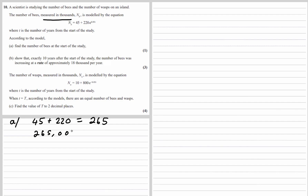Part B: we need to show that exactly 10 years in — when t is 10 — the number of bees was increasing at a rate of approximately 18,000 per year. When it's the rate of change, it means differentiation. We want dn/dt, so we need to differentiate. The constant 45 disappears and e stays the same.